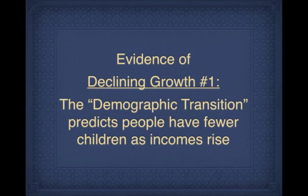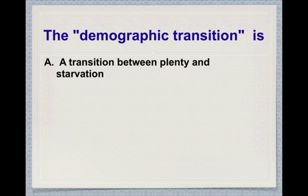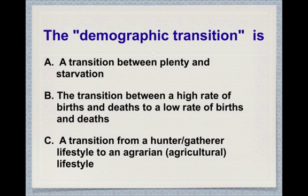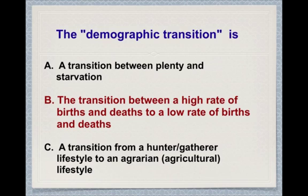First, the demographic transition predicts that as incomes rise, population growth rates will go down. The demographic transition is a transition from high rates of births and deaths to low rates of births and deaths.